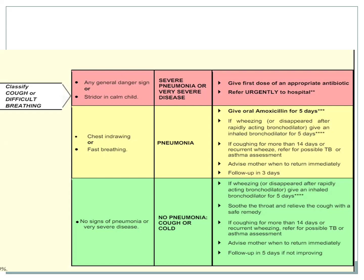The mother is asked to return immediately if the child's condition is not improving or if any general danger sign develops. In the green category, if there are no signs of pneumonia or severe disease, it is classified as cough or cold. If there is concomitant wheeze, bronchodilator is provided for 5 days. If coughing persists for more than 2 weeks, TB or asthma assessment is necessary. The mother is counseled on when to return.